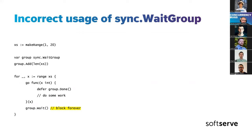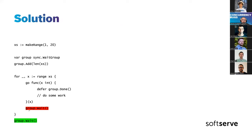Another fairly simple example involves misuse of WaitGroups. Here, the WaitGroup is waited on inside the for loop — it's going to block on the first iteration. The fix is straightforward: just ensure you wait outside of the for loop.